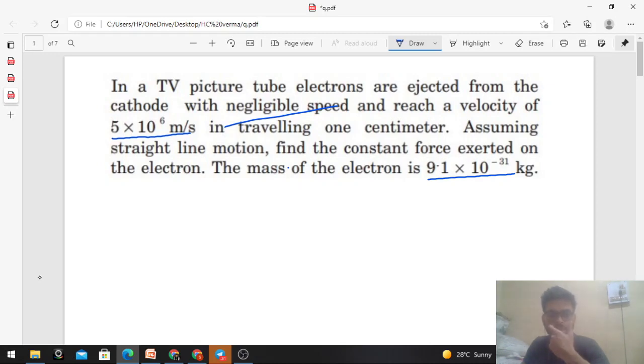First, let's see what information is given. Initial speed - negligible speed, so initial velocity u ≈ 0. Final velocity v = 5×10^6 m/s. Distance traveled is 1 centimeter, or in SI units, s = 10^-2 meter.